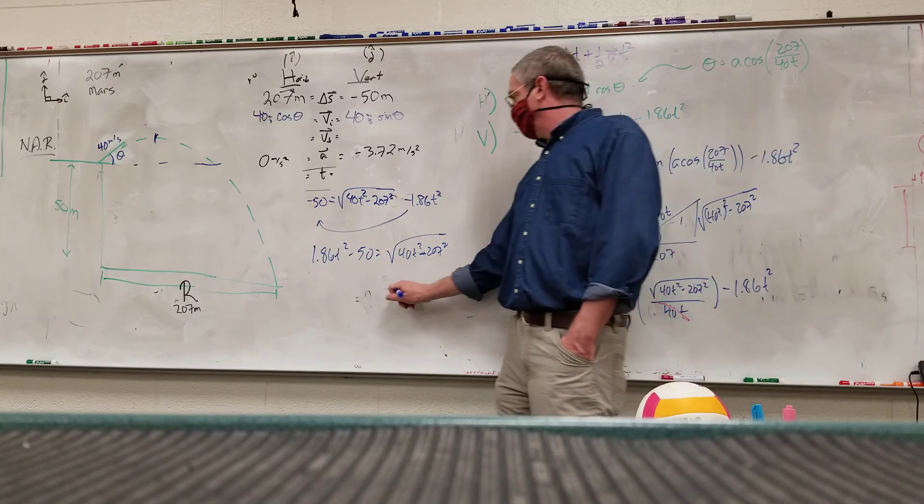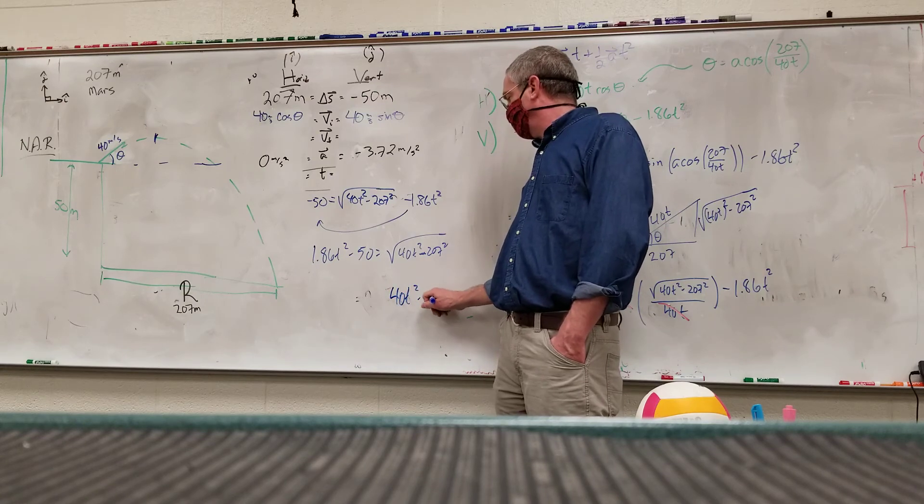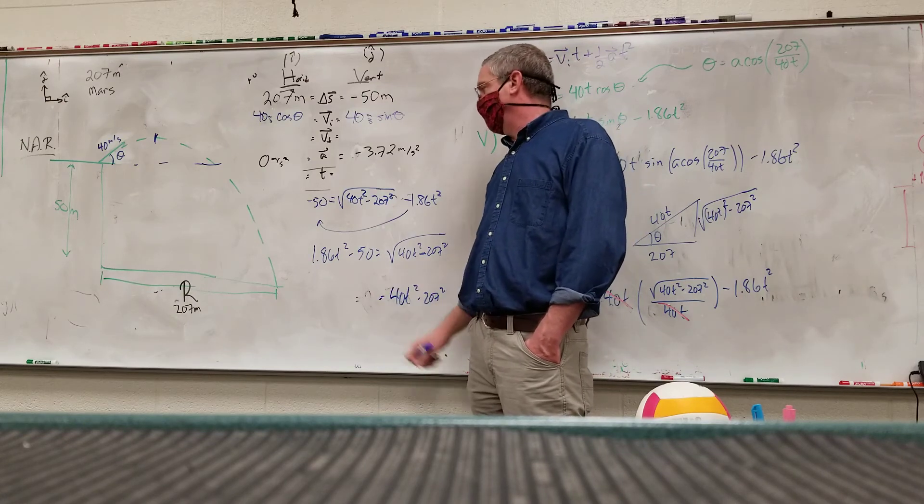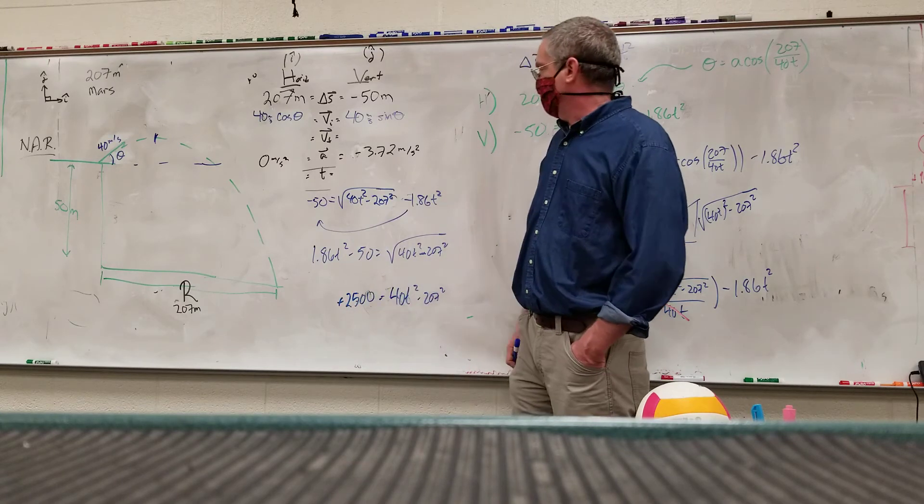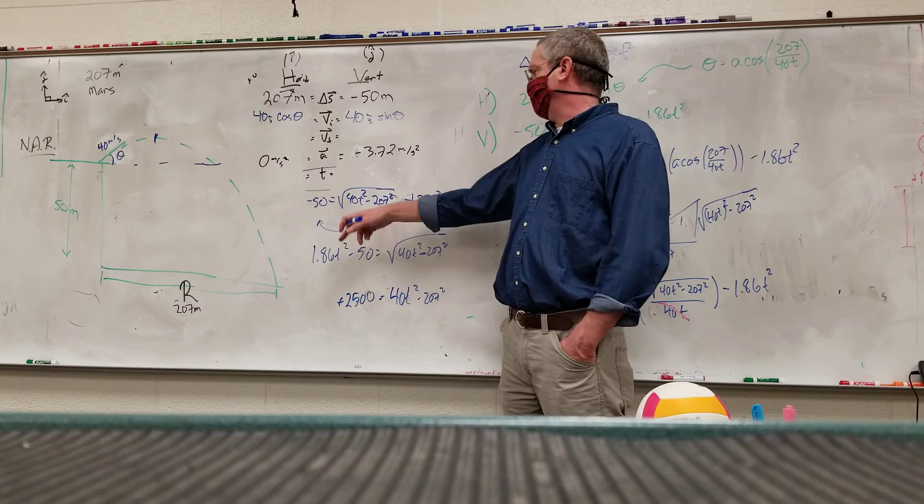Can you square it? Can you square it? We have to do something first before we square it. We could square it, but we're squaring a binomial here to treat that as a single term, and so we'd still have the radical over here. Isolate the radical. So 1.86t squared minus 50 equals the square root of 40t squared minus 207 squared. Now you square it. So 40t squared minus 207 squared equals that. I got the last one, plus 2,500. 1.86 squared. 3.459.